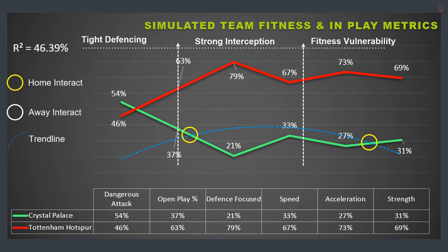When Tottenham Hotspur's stamina value was predicted to reach 69.49% by the end of the game, significant damage might be inflicted to its own team.